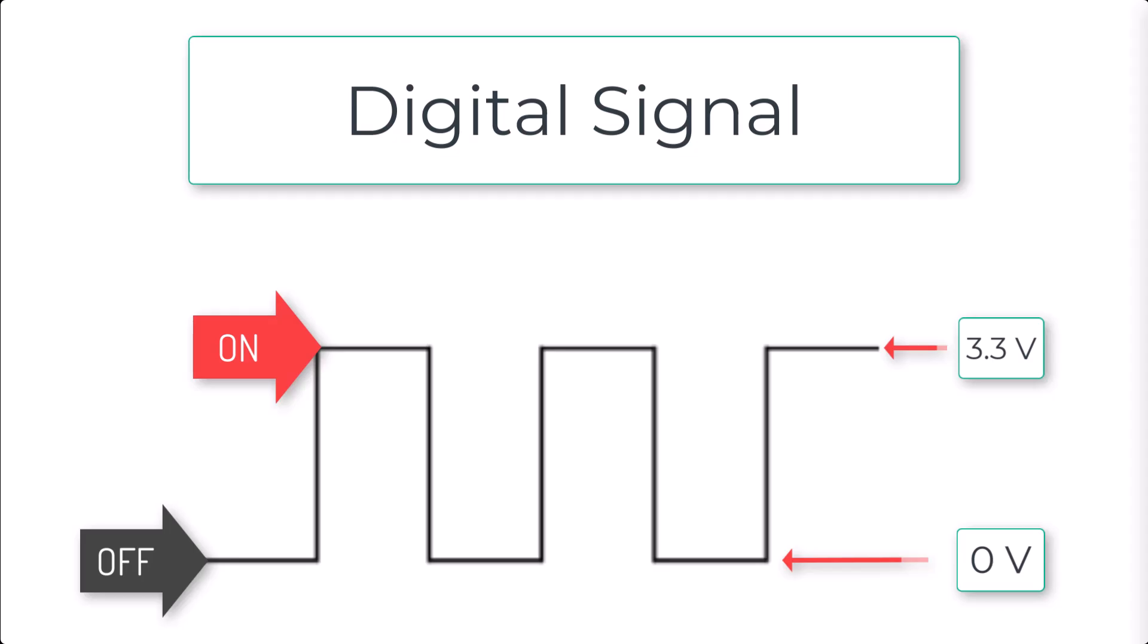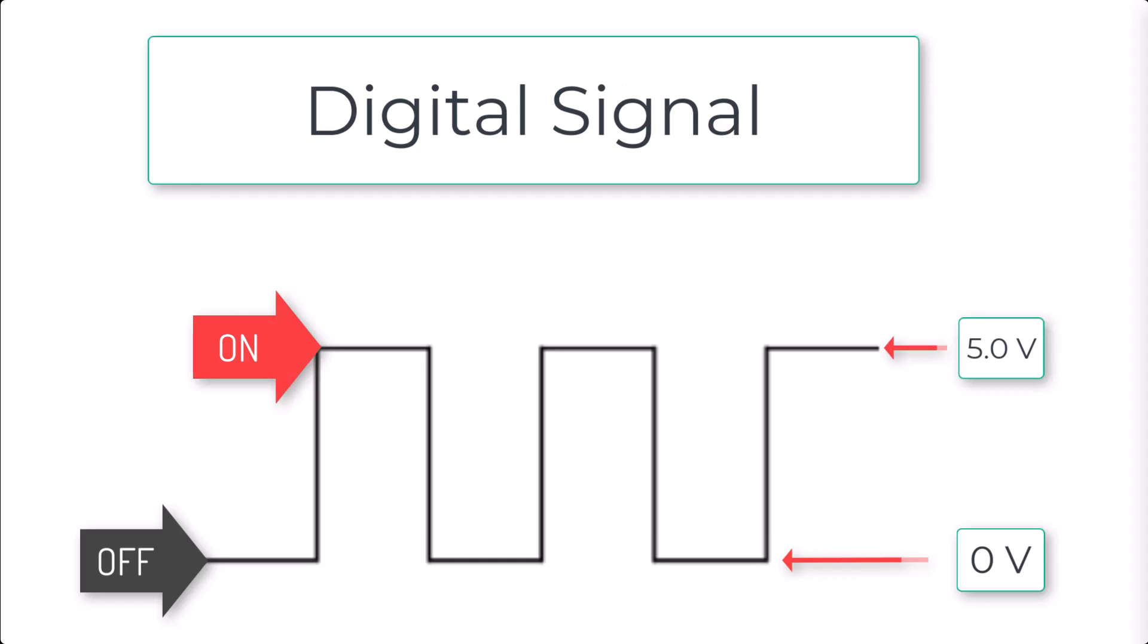However, the exact voltage levels for on and off can vary between systems. For example, some systems use 5 volts or higher as on, but the important concept is that the signal remains binary.